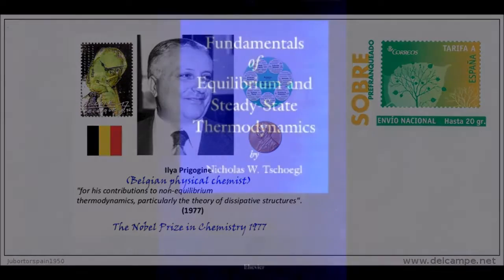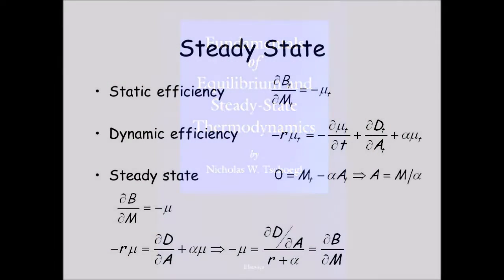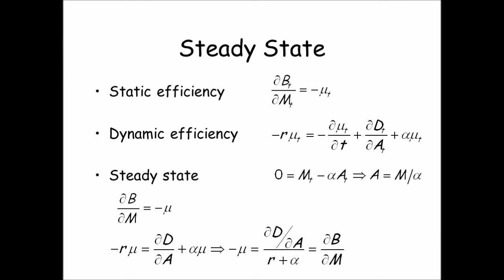The dissipative structures considered by Prigogine have dynamical regimes that can be regarded as thermodynamically steady states, and sometimes at least can be described by suitable extremal principles in non-equilibrium thermodynamics.